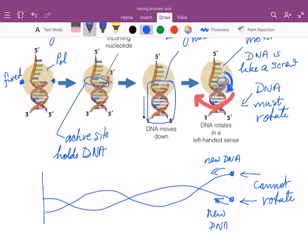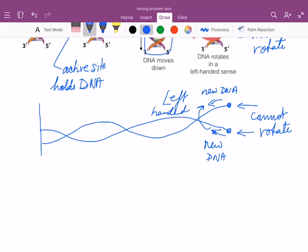So new DNA comes in, but because the polymerase holds these two ends, they cannot rotate. And since the polymerase is introducing rotation in a left-handed rotational sense, when it feeds the new DNA in, the consequence of this will clearly be that with time, the DNA unwinds.